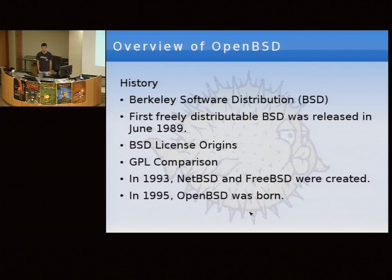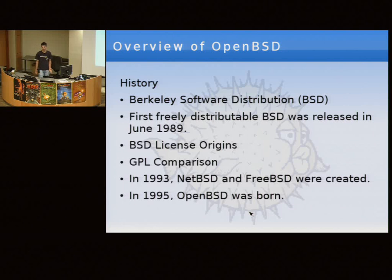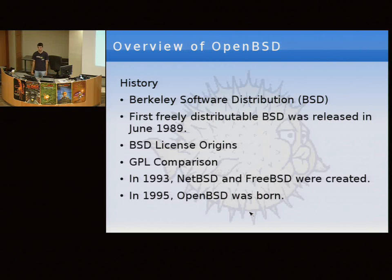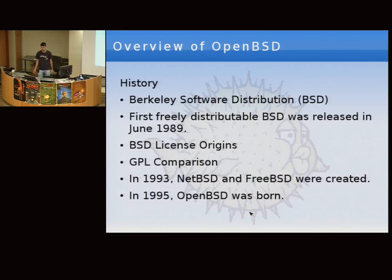In the beginning, people didn't care about licenses. The first freely distributable release with what we call the BSD license was released in June 1989. The key thing about this license is that it's free to use by anybody for whatever they please. You have to retain copyright notices when you modify files, and there was an advertisement clause requiring credit to UC Berkeley, but that clause has since been removed. Basically, this stuff is free — as free as it gets.